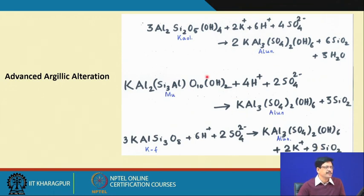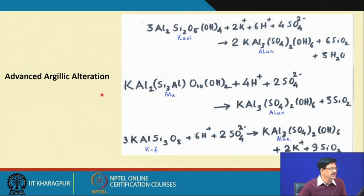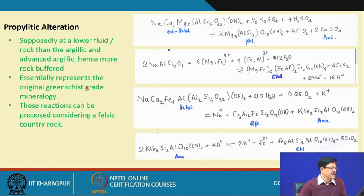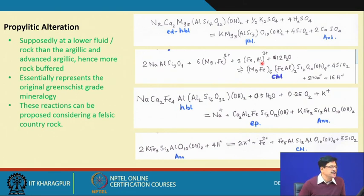There are several such reactions: muscovite acted upon by sulfate at very low pH conditions can give alunite, and potassium feldspar at very low pH can also give rise to alunite. This explains some overlapping situations where one alteration zone can penetrate into another. In most cases the alteration zones are identifiable. The propylitic alteration zone is characterized by the presence of epidote and chlorite. It indicates a rock-dominated system with a low fluid-to-rock ratio, essentially showing persistence of original greenschist facies type assemblages in the rock.